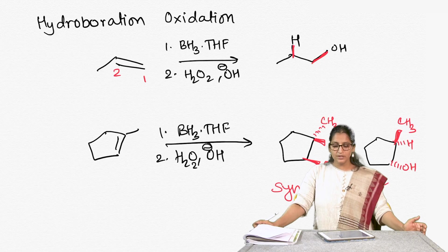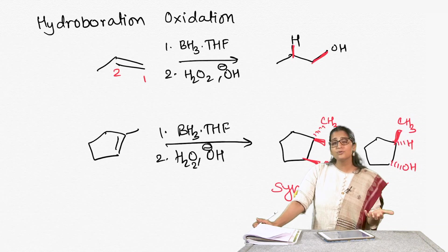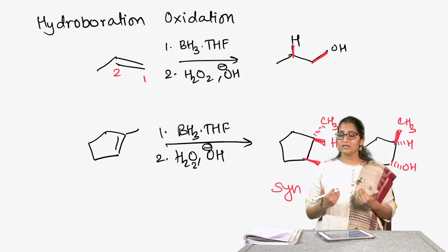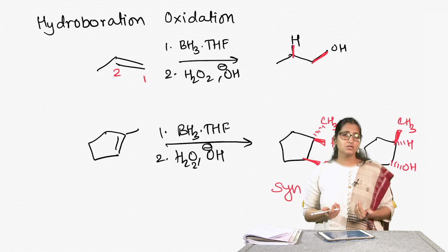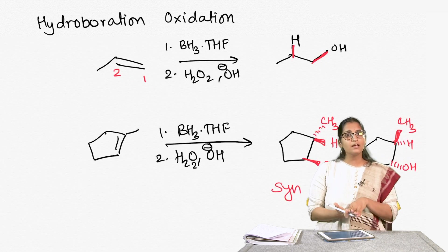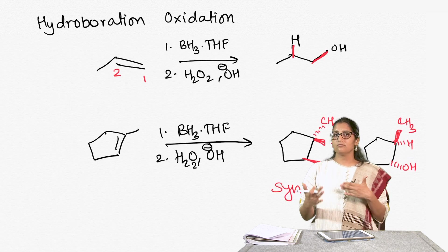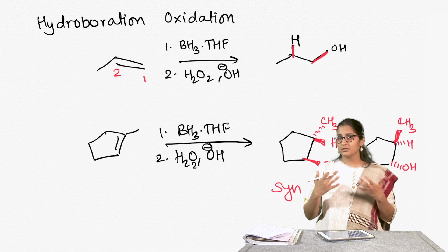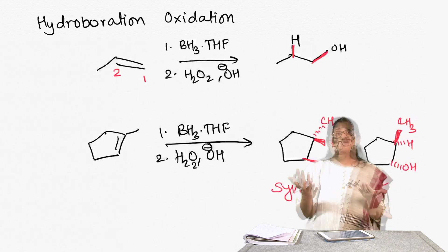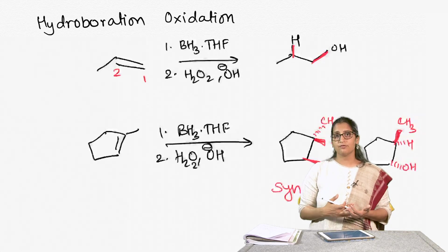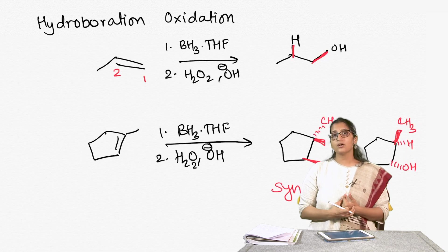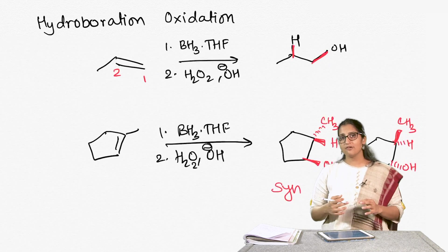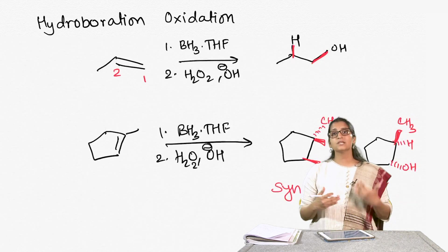If H and OH are always ending up syn, what does that tell us about the mechanism? If they always end up on the same side, we are probably not forming a triangular intermediate — because the bromonium ion triangular intermediate led to anti-addition. We are also not forming a carbocation intermediate, because that would give a product with OHs attacking from both top and bottom. The mechanism must be something we haven't seen before.